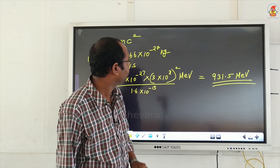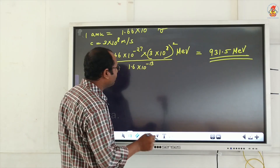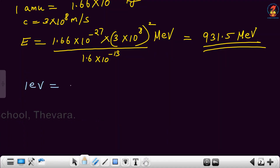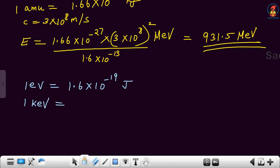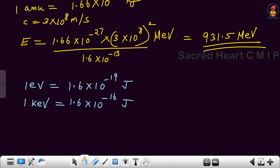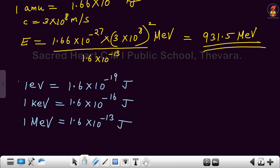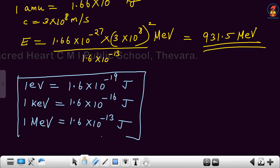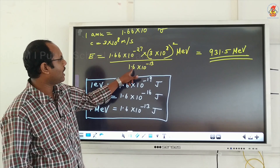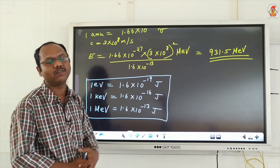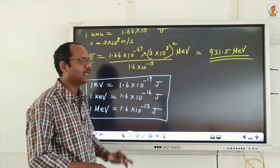Please take this down. Some important conversions: 1 electron volt = 1.6 × 10⁻¹⁹ joules; 1 kilo electron volt = 1.6 × 10⁻¹⁶ joules; and 1 mega electron volt = 1.6 × 10⁻¹³ joules — that is why we divided by 1.6 × 10⁻¹³ to convert to mega electron volts. Please note these conversions.